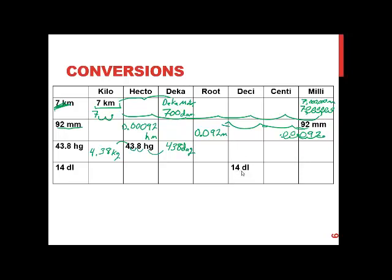If we go from deciliters to milliliters, we move the decimal two places to the right — so 14 deciliters becomes 1,400 milliliters. Going to deciliters from a larger unit, move two places to the left, giving 0.14 deciliters.